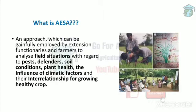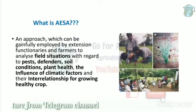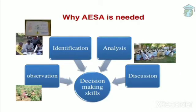Officers will teach the farmers how to do field operations in order to protect the plant and at the same time the environment. AESA is an approach where extension functionaries — that is, trained officers — communicate with farmers and teach them how to do field operations, how to control pests, and how to maintain soil fertility. Next is why AESA is needed — it is needed for decision making skills.